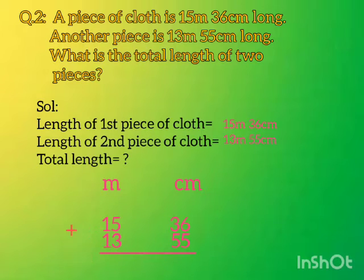How many meters? 15 meter 36 centimeter, and the second length is 13 meter 55 centimeter. Now students, we have 2 pieces, 2 cloths of this length, so we will add them.